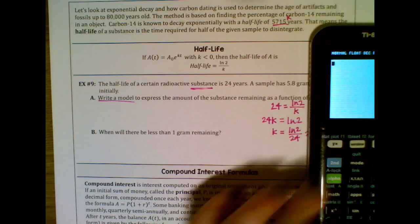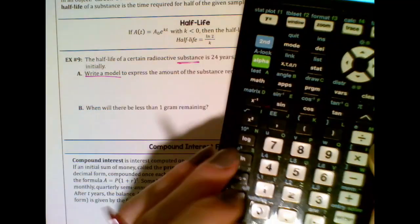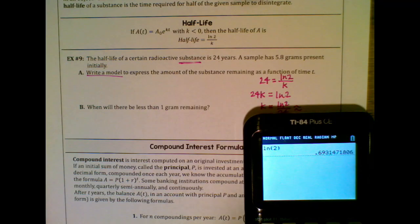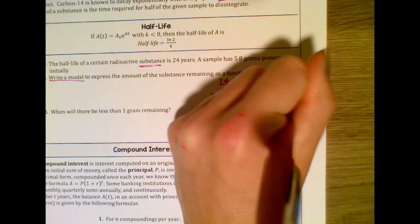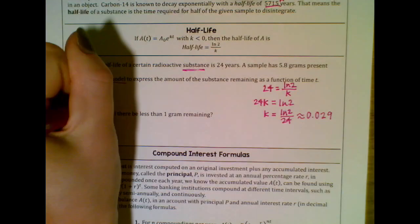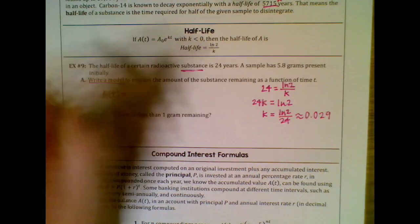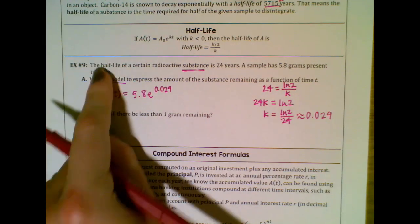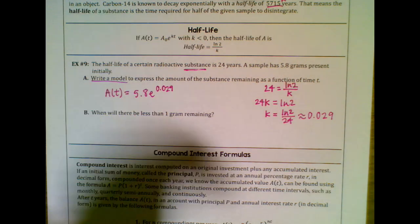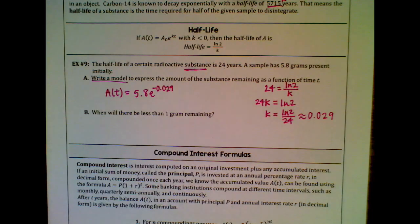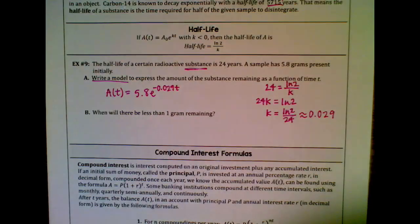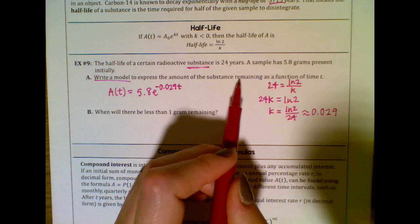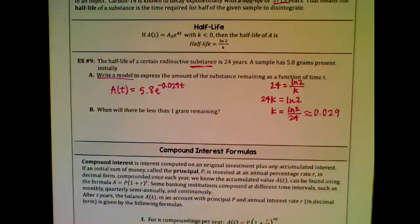The natural log button is below LOG on the calculator. Computing ln(2) / 24 ≈ 0.029. So the equation is: a(t) = 5.8 × e^(−0.029t). The initial amount is 5.8 grams, k ≈ 0.029, and since the substance is disintegrating it's a negative k value. You're losing the substance, so you must use negative k.